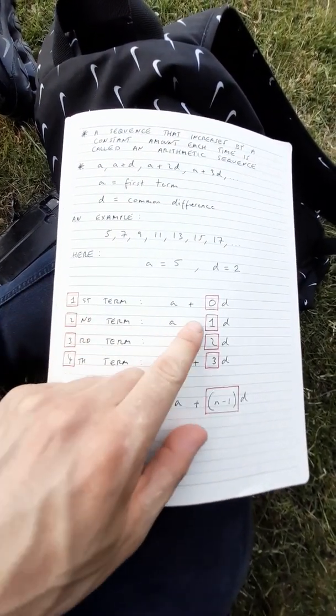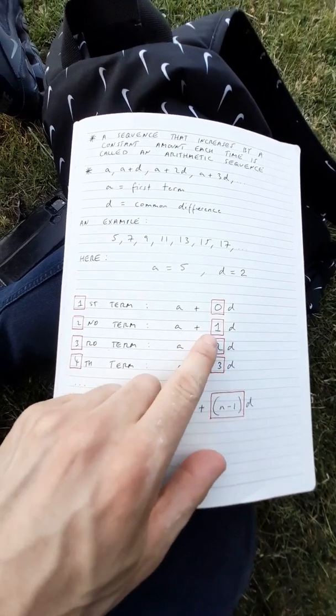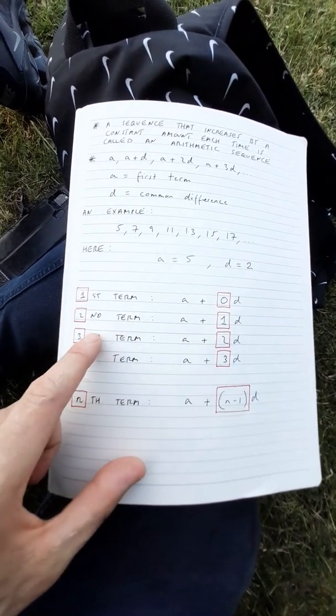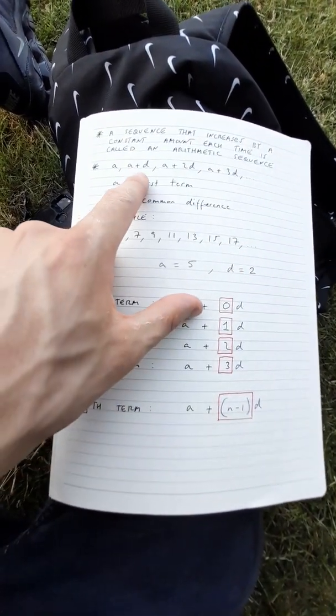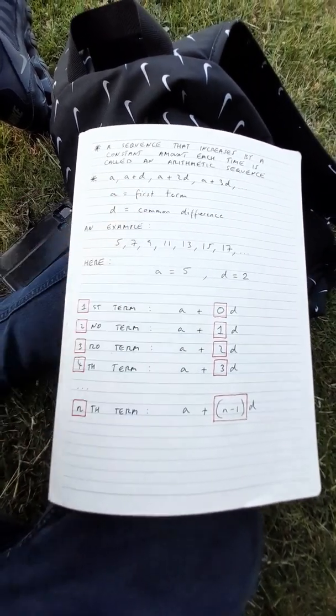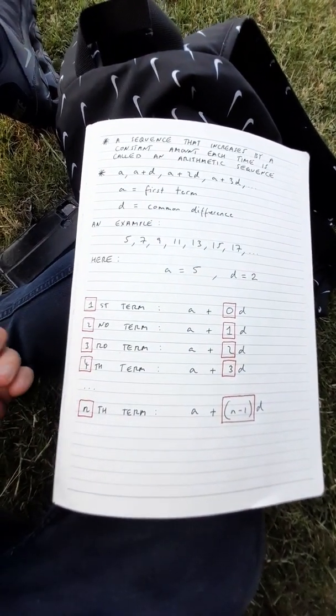The second term is a plus 1d and 1 is 1 less than 2. And we can see this over here. For the second term we have a plus d which is the same as a plus 1d.